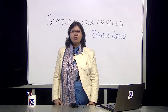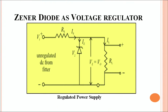Let's understand the working of a Zener diode via the circuit diagram. In this circuit, the Zener diode is connected in reverse bias via the unregulated DC obtained from the filter. A full wave rectifier converts the AC signal into DC, yet there are ripples. Even after passing through the filter, the output is not very smooth. We then input that current through the Zener diode which is in reverse bias.